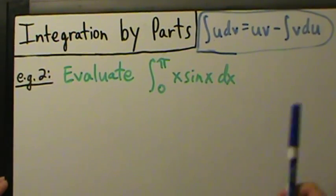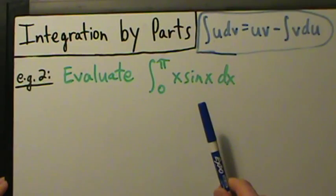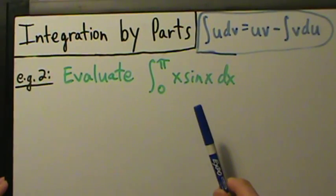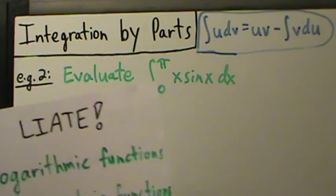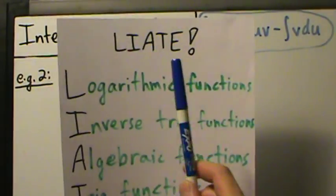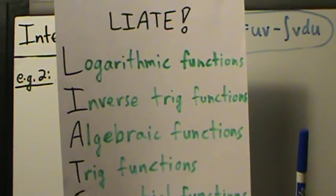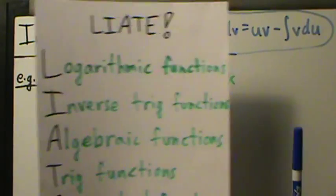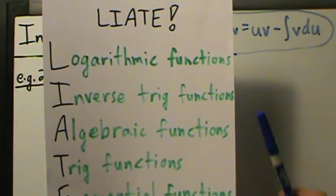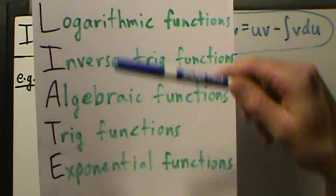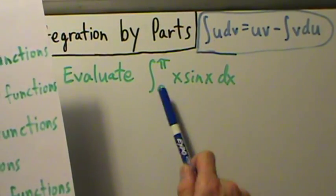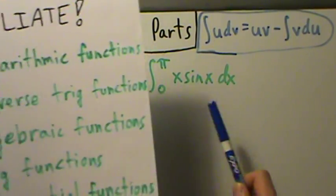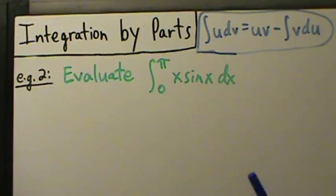Integration by parts can be used for definite integrals also, and nothing's really different. You still choose u the same way. We also talked about how to choose u with the LIATE rule. Choose u to be the first type of function that appears on this list — start at the top, work your way down — and whichever function you see first in your integrand, choose u to be that.